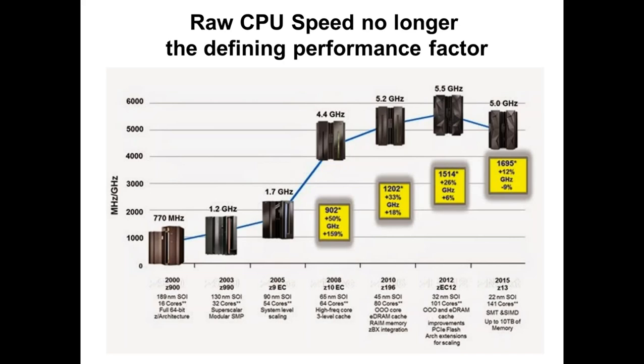Looking at IBM mainframe processor speed gains over the years: there was a big jump when the z10 came along — a 50% increase — then 33%, 26%, and finally with the z13 only a 12% increase. This is a side topic, but you hear all this talk about Moore's Law potentially slowing down or coming to an end.